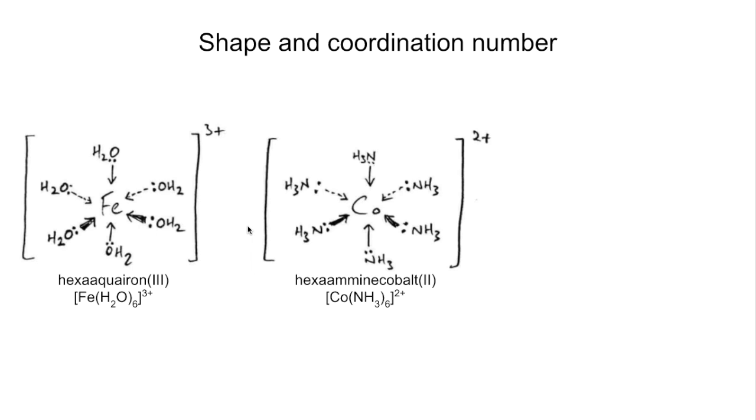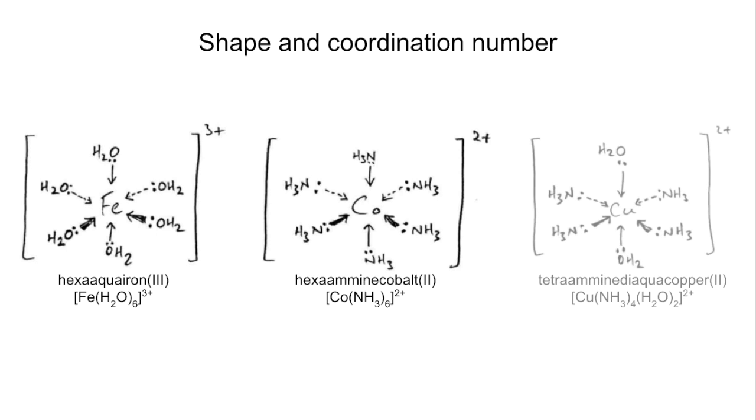Hexa-amine cobalt 2, this one. It's central cobalt with six ammonia ligands around. Cobalt is in the +2 oxidation state. We can tell because the charge is 2+. Ammonia ligands have no charge. And finally, we've got a mixed ligand complex now. We've got central copper with two water ligands and four ammonia ligands. This is tetra-amine-diaqua-copper 2. Copper's in its +2 oxidation state, hence the charge. Ligands have no charge, and there's the formula there.